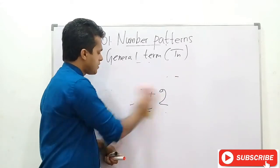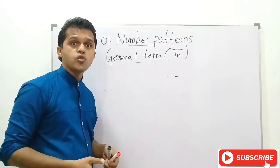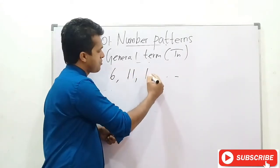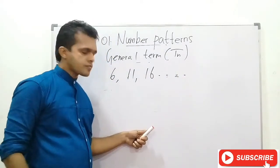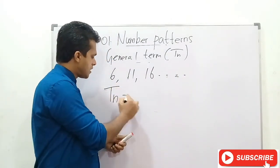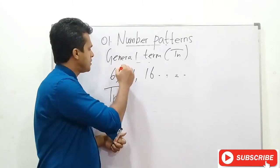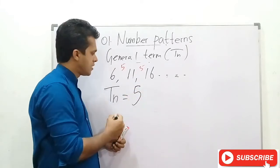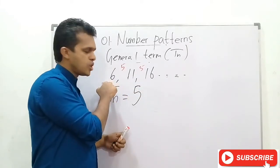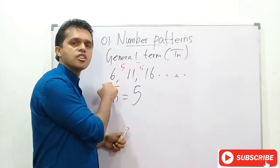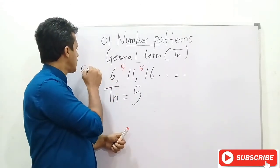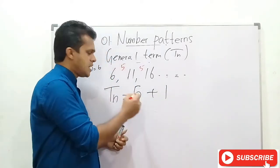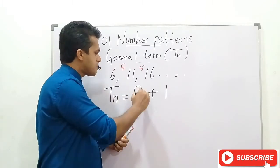Let's find the general term of the number pattern 6, 11, 16. Here 6 plus 5 is 11 and 11 plus 5 is 16. The common difference is 5, so write 5. To get the first term 6, you need 5 plus 1 equals 6, so write plus 1 and N. Therefore TN equals 5N plus 1.